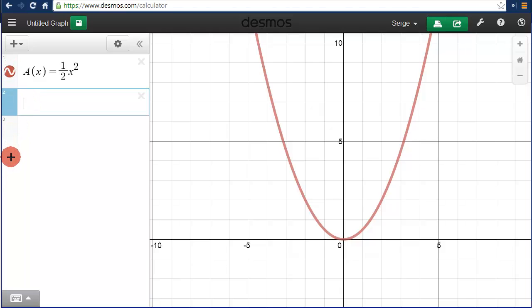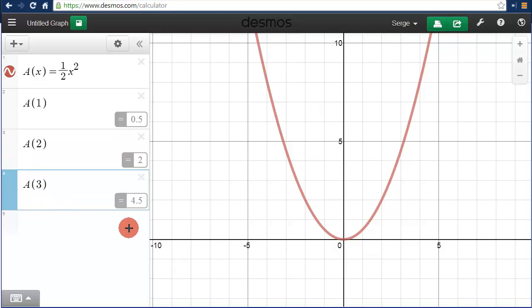All right, now this function will evaluate for us very nicely. So if I want to know a of 1, I can actually just type that in, a of 1, and it spits out the value. I could figure out a of 2. And in this fashion, we could come up with a table.